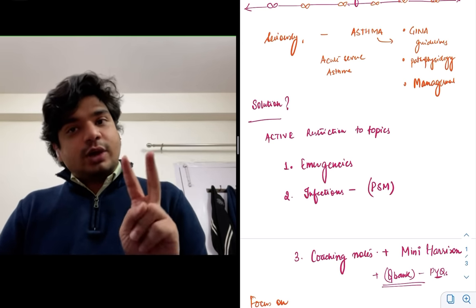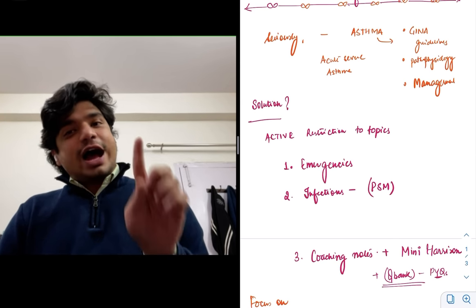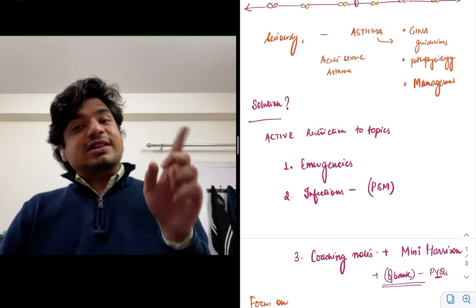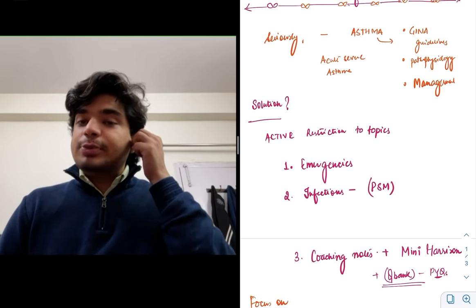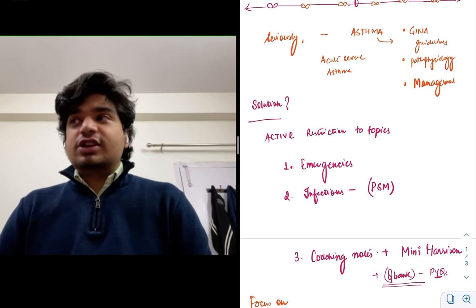The second thing that you have to actively do is infections. But for infections, you don't need to actually read Harrison. You actually actively need to read PSM. PSM is a much better book. Your PARC is a much better book as far as infection is concerned, be it malaria, dengue, typhoid, chikungunya, whatever it is.